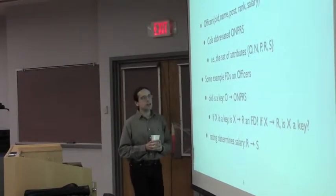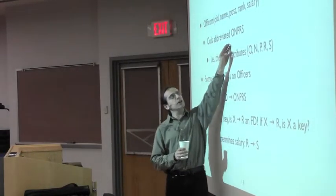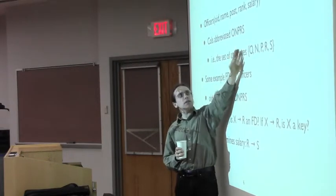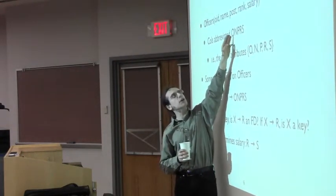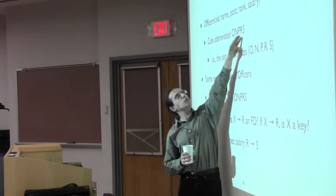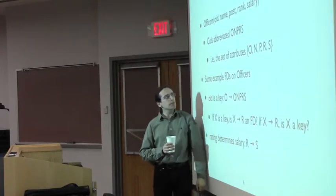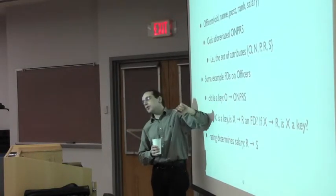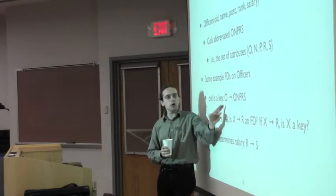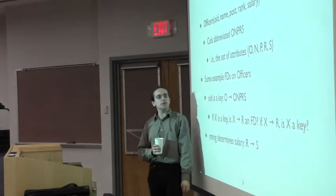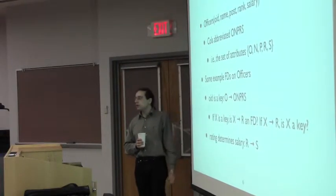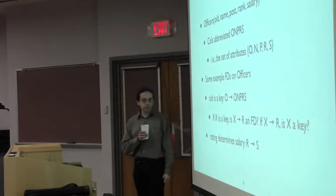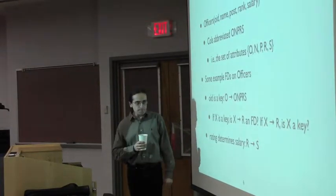Let me give a bit more of an example using the first letter of each attribute concatenated together — so OIDNPRS means the set of attributes OID, name, post, rank, salary. The most obvious example: if OID is a key, you can think of that as a functional dependency from O to the entire relation. If you know the officer ID, you can look up the corresponding data values for that particular officer.